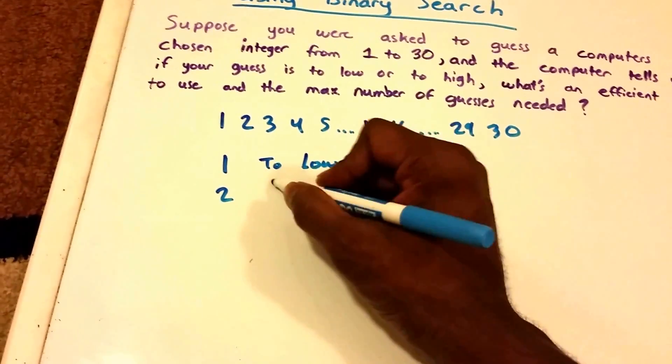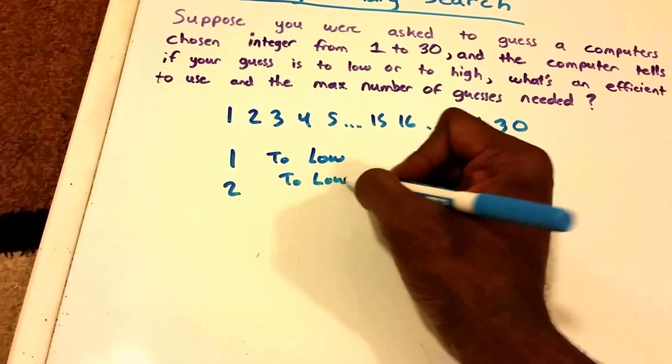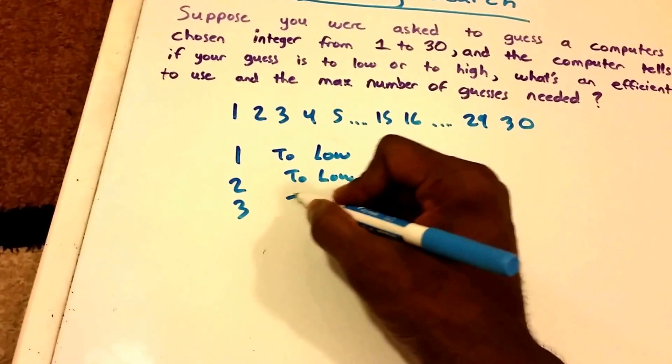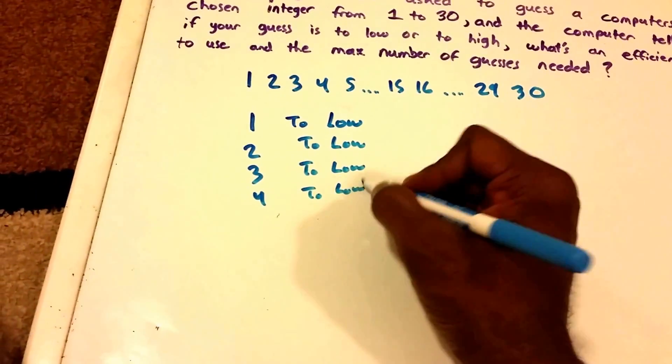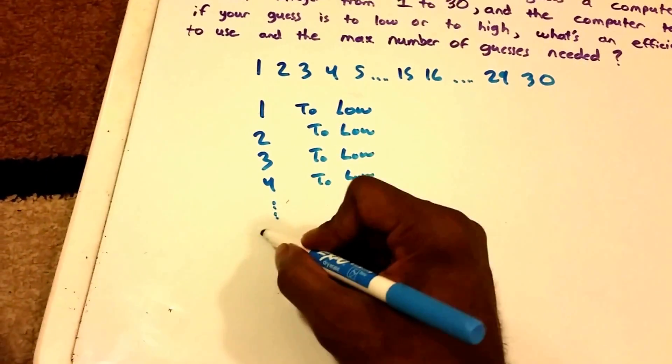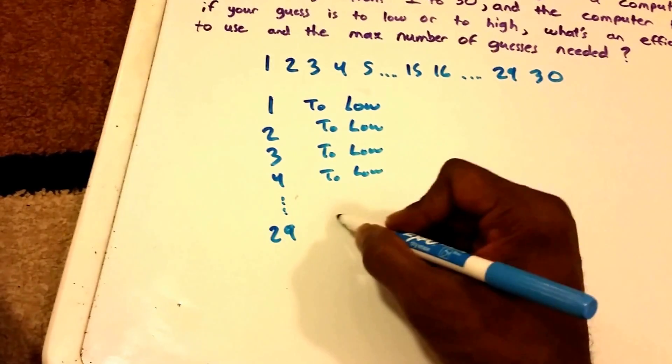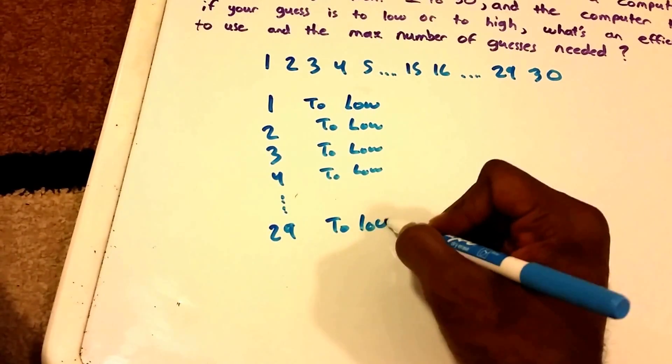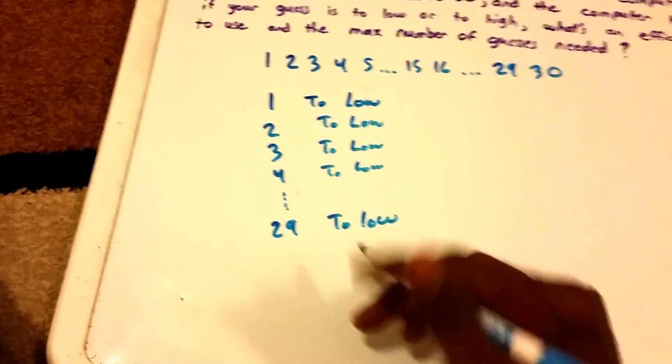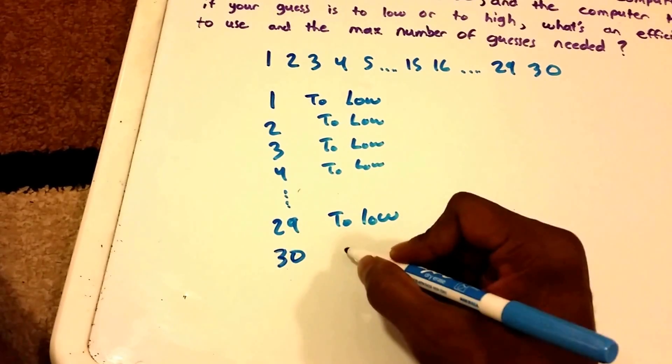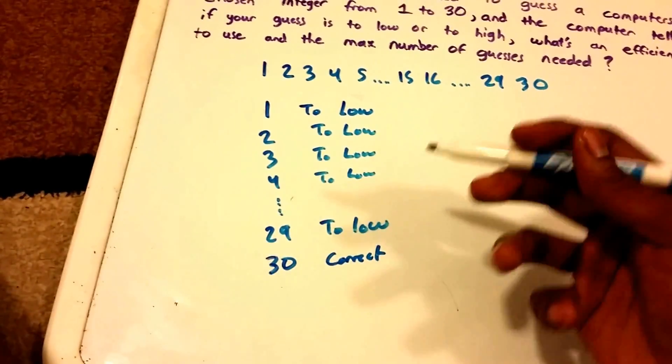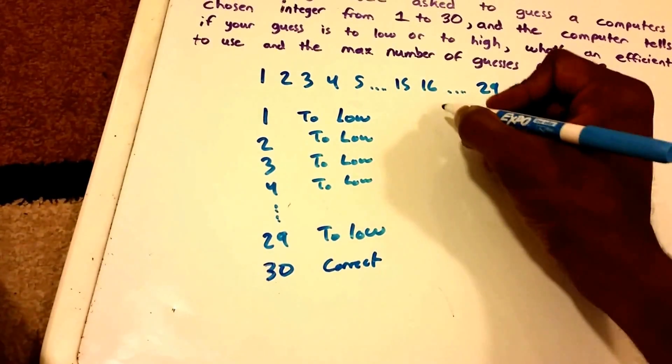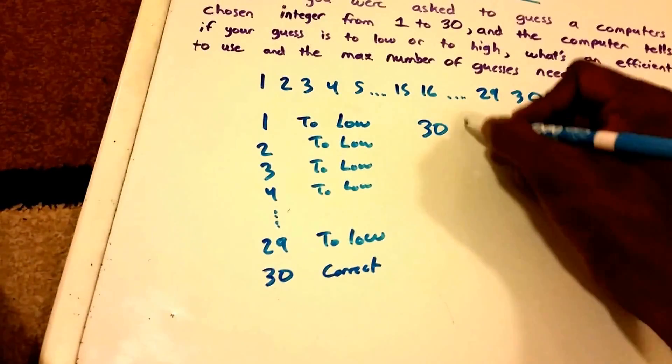It'll say your guess is too low. So then maybe we'll choose 2, and then again it'll say too low. And then 3, and then again our guess is too low. And then we'll choose 4, our guess is too low. And we'll keep doing this until we get to 29, and then it'll say our guess is too low. And then we'll say 30, and then it'll say correct. And the number of guesses that it took us is 30. So it took 30 guesses.